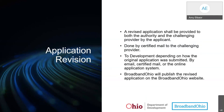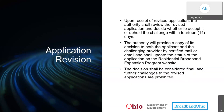A revised application will be provided to both the authority and the challenging provider by the applicant via certified mail, as well as to the Department of Development. Broadband Ohio will publish the revised applications on the Broadband Ohio website. Upon receipt of revised applications, the authority will review the revised application and decide whether to accept or uphold the challenge within 14 days. The authority will provide a copy of its decision to both the applicant and the challenging provider by certified mail or email, and will update the status on the website. This decision shall be considered final, and further challenges to the revised applications are prohibited.